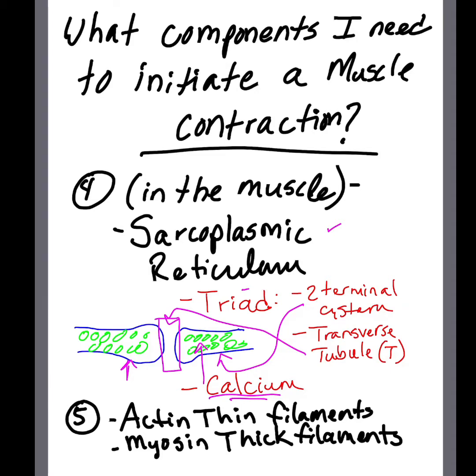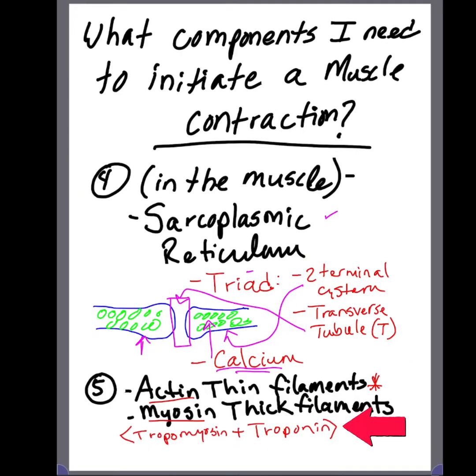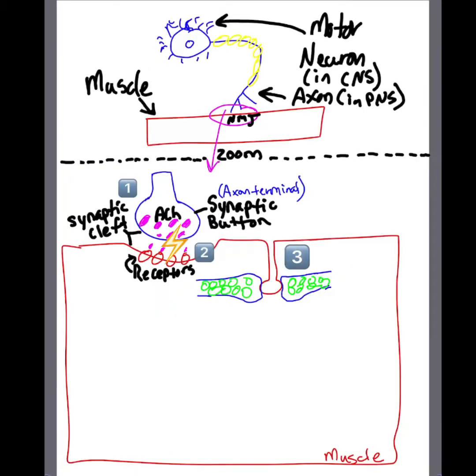Calcium is inside the sarcoplasmic reticulum. Last but not least, we're also going to be needing actin thin filaments, myosin thick filaments, and also two additional proteins that are within actin thin filaments: tropomyosin and troponin.